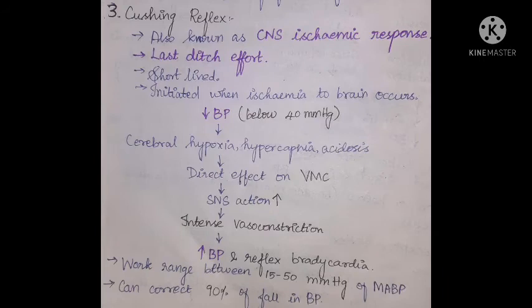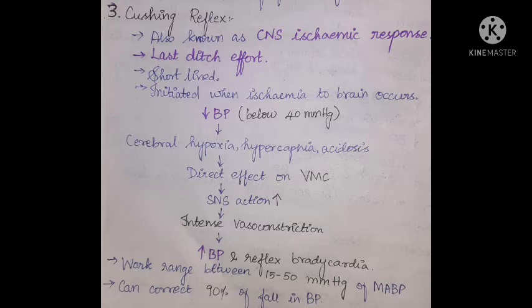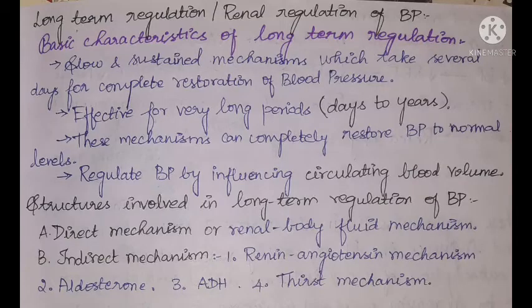Cushing's reflex, also known as the central nervous system ischemic response, is the last-ditch effort — the last attempt of the body to increase blood pressure. It is very short-lived and initiated when ischemia to the brain occurs, when BP falls below 40 mmHg, causing cerebral hypoxia, hypercapnia, and acidosis. This directly stimulates the vasomotor center, increasing sympathetic action, causing intense vasoconstriction to restore normal blood pressure, and produces reflex bradycardia. Working range: 15 to 50 mmHg; can correct up to 90% of fall in blood pressure.